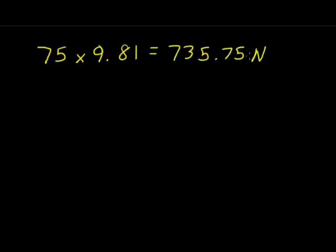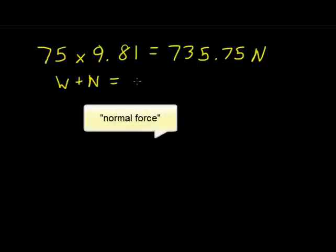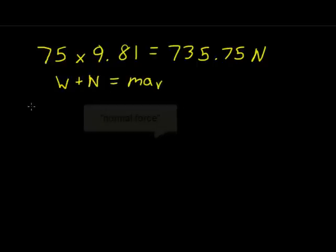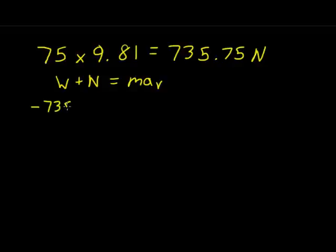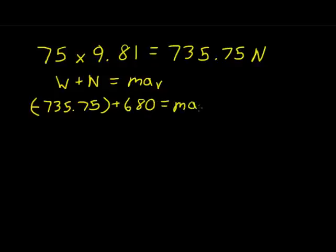We then plug this into our original equation: weight plus ground reaction force equals mass times acceleration in the vertical direction. We use negative 735.75 newtons since weight was designated as negative, and add positive 680 newtons for the ground reaction force, setting this equal to mass times acceleration.